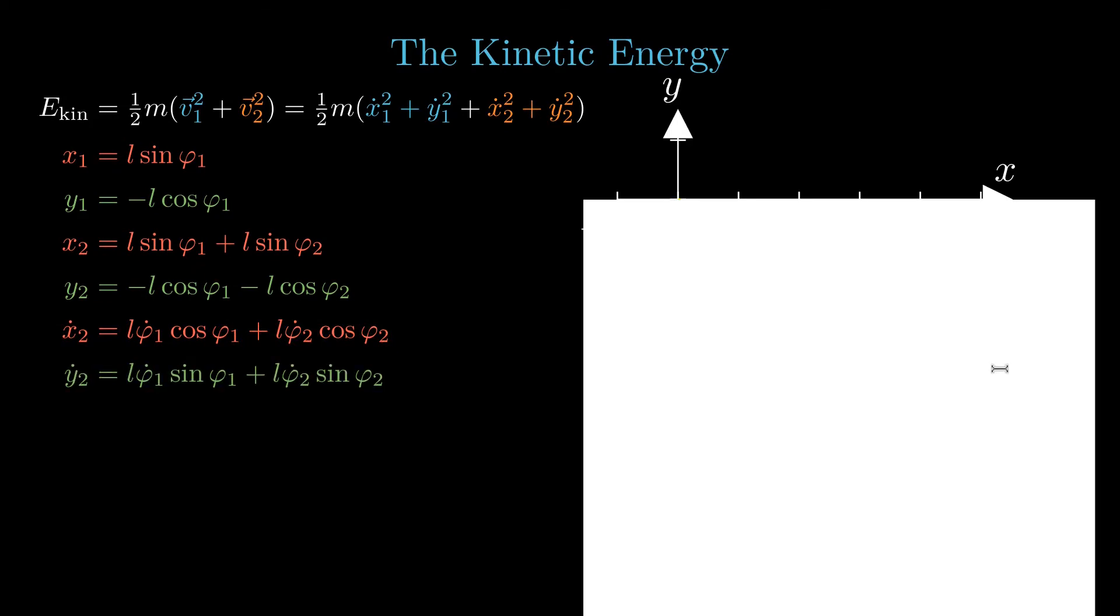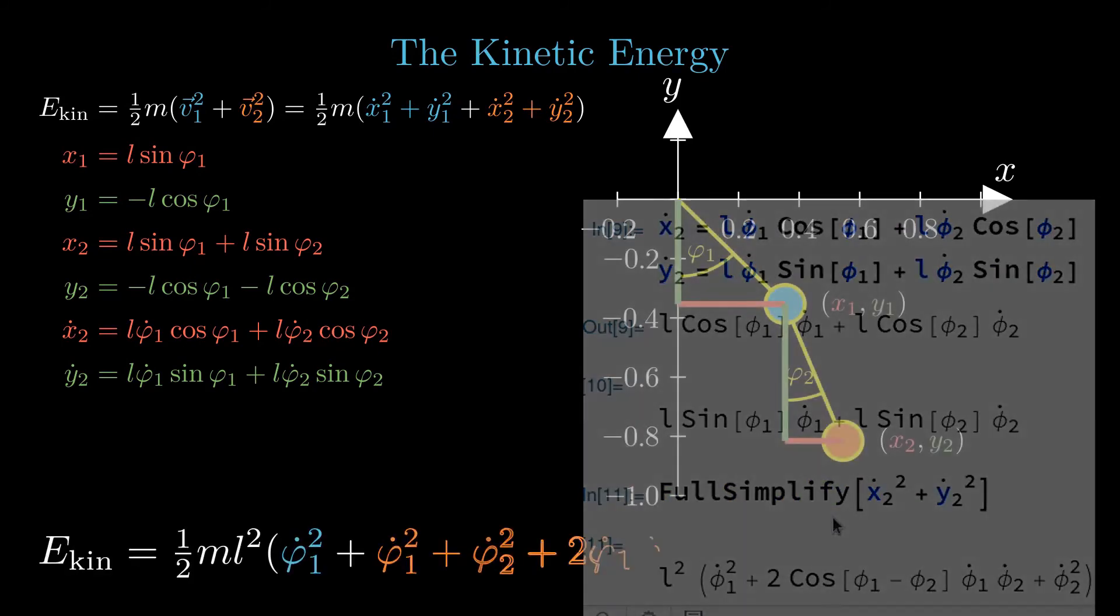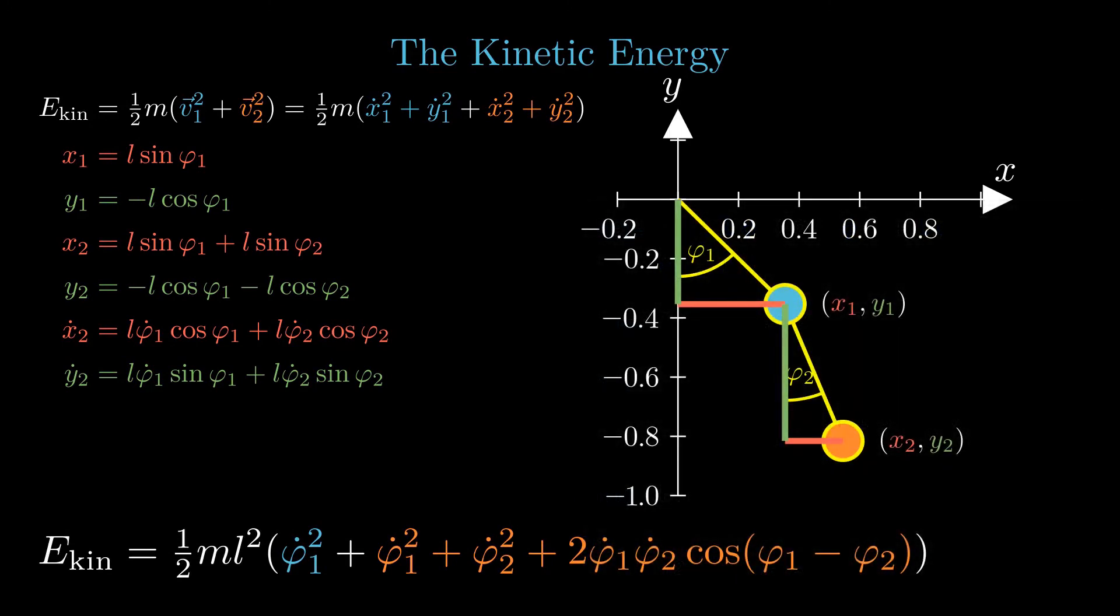This time, the trigonometric functions do not cancel after squaring the components. It is possible to work out the result by hand, but I wouldn't blame anyone to search for help. Computer algebra software quickly does the job. It is the last term in the expression for the kinetic energy that mathematically describes the coupling between the upper and lower pendulum.